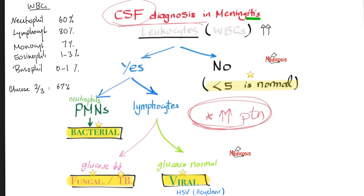What type of meningitis? If the leukocytosis is predominantly neutrophils, it's probably bacterial meningitis — neutrophils fight bacteria. If predominantly lymphocytes, it's probably viral or fungal/tuberculosis. To differentiate: fungi and tuberculosis are living organisms that eat your glucose, so CSF glucose is decreased. If lymphocytes are high and glucose is low, it's fungal or tuberculous meningitis. If glucose is normal with high lymphocytes, it's likely viral meningitis such as herpes.